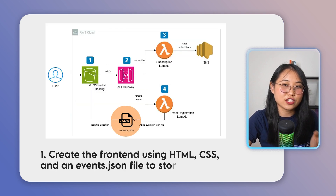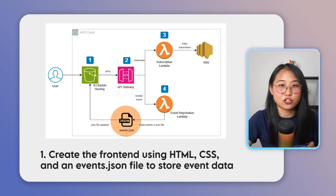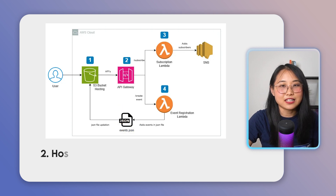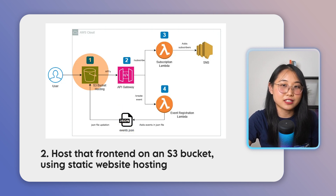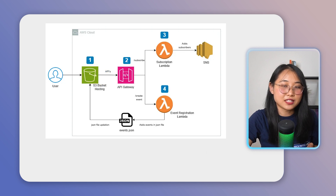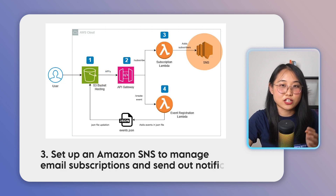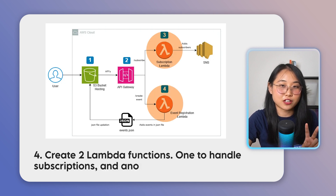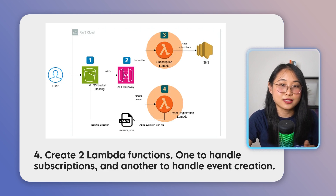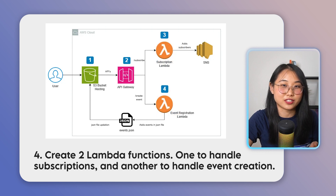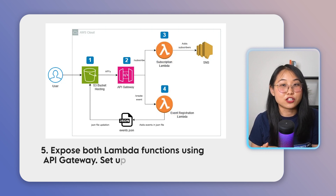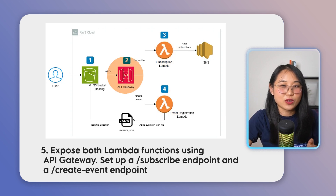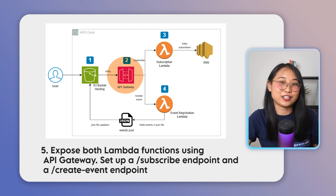First, create the front-end using HTML, CSS and an events.json file to store event data. Next, host the front-end on an S3 bucket using static website hosting. After that, set up Amazon SNS to manage email subscriptions as well as send out notifications. Once that's done, you'll need to create two Lambda functions — one to handle subscriptions and another to handle event creation. And finally, expose both Lambda functions using API Gateway. This is where you'll set up a subscribe endpoint and a create event endpoint that your front-end can call.